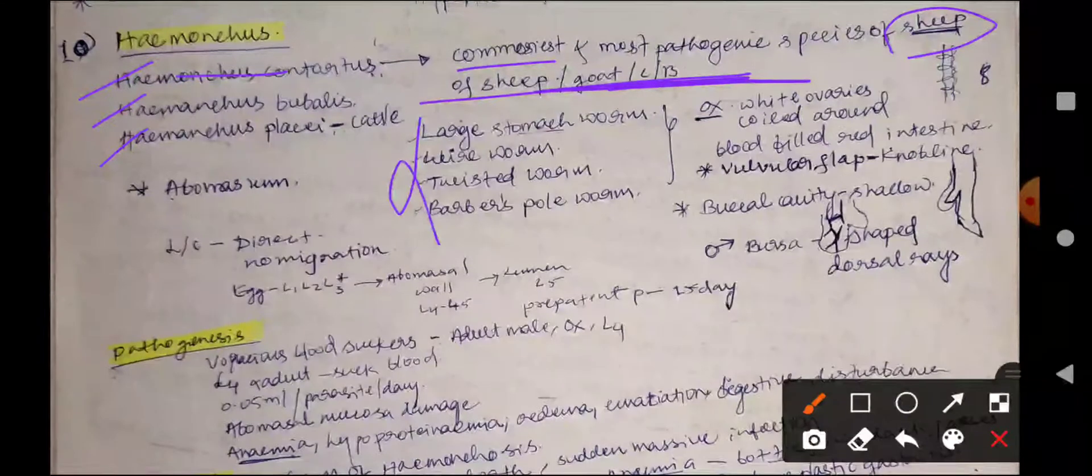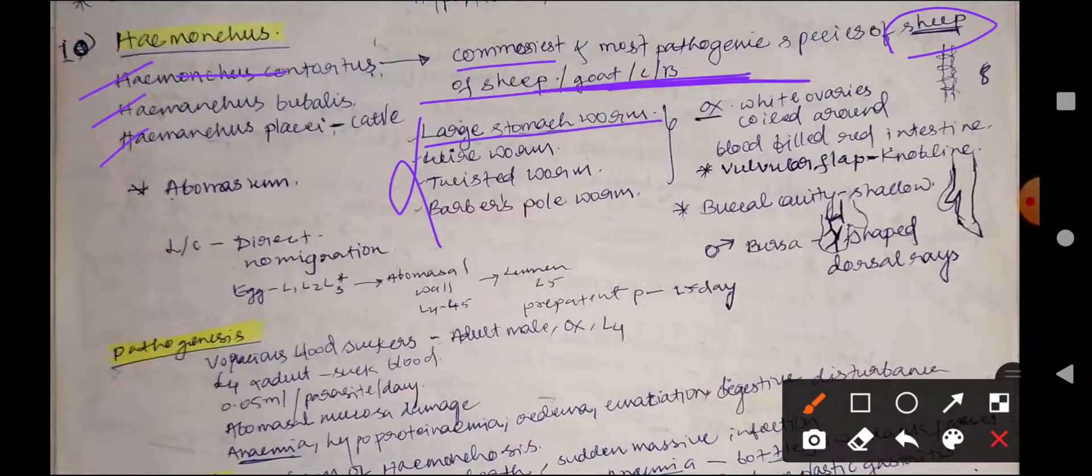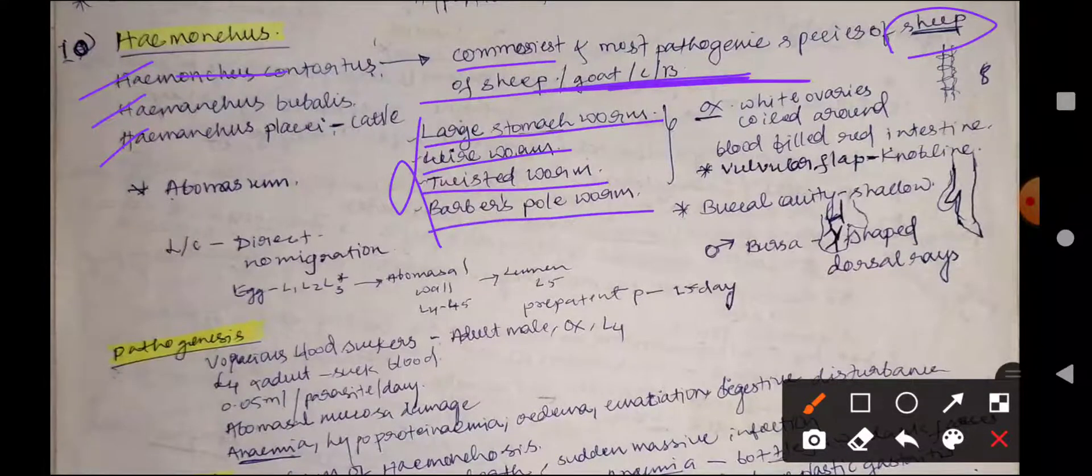They are commonly called large stomach worm, wire worm, twisted worm, and barber's pole worm.